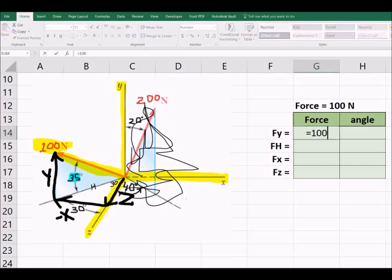The y component of the 100 Newton force, this is the opposite side. So that's going to be the sine of that 35 degrees. And then down on the ground, this becomes our hypotenuse of the triangle on the ground, but it's the adjacent side of the 35 degrees. So that's cosine. So katoa.